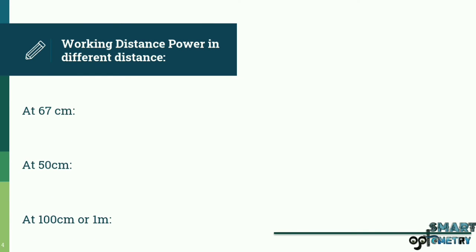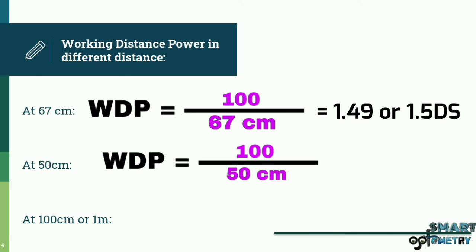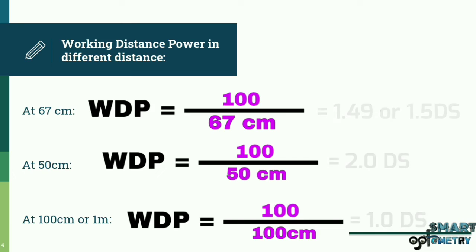Here are a few common working distances and their corresponding working distance powers: at 67 centimeters, the working distance power is 1.5 diopters; at 50 centimeters, it is 2 diopters; and at 100 centimeters, it is 1 diopter. These values need to be subtracted from the retinoscopy value.